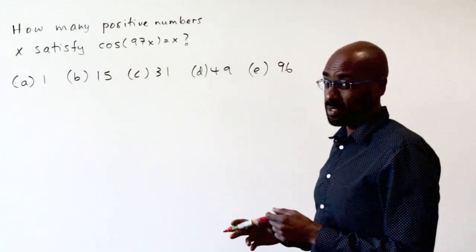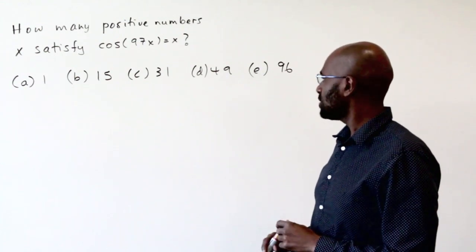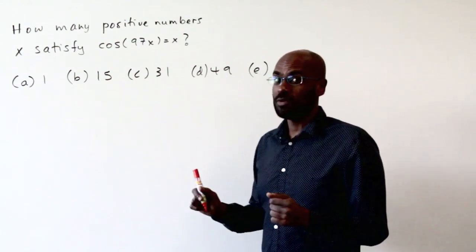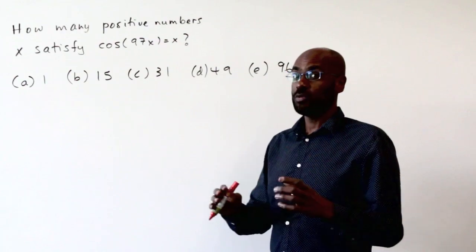And one of the things that's interesting about it is a complicated seeming equation. Because of the answer choices that we have, we can get an answer pretty quickly.